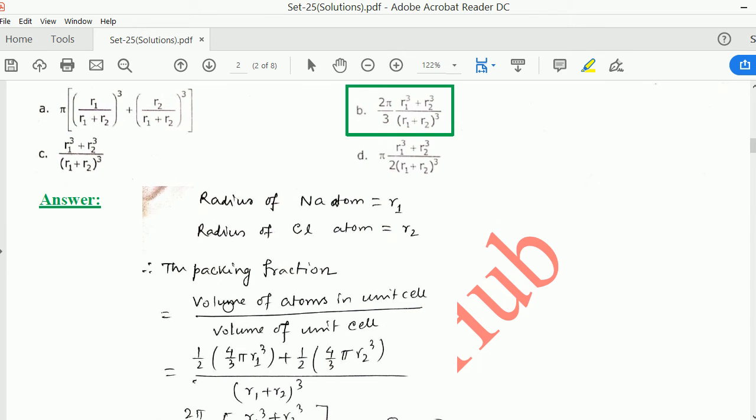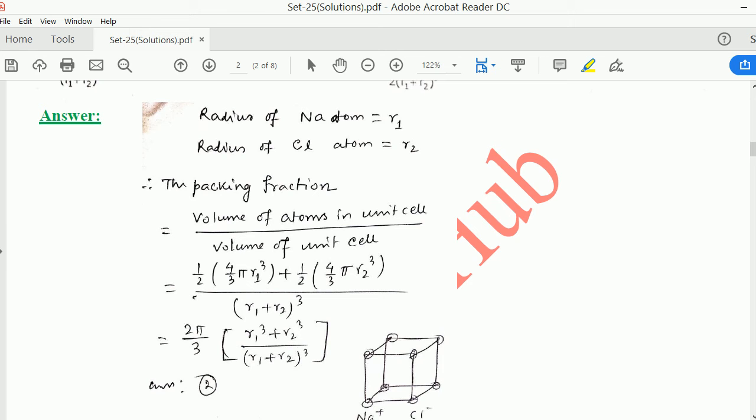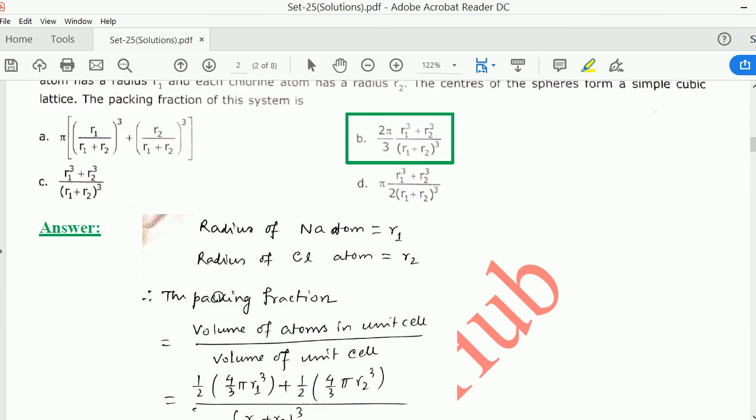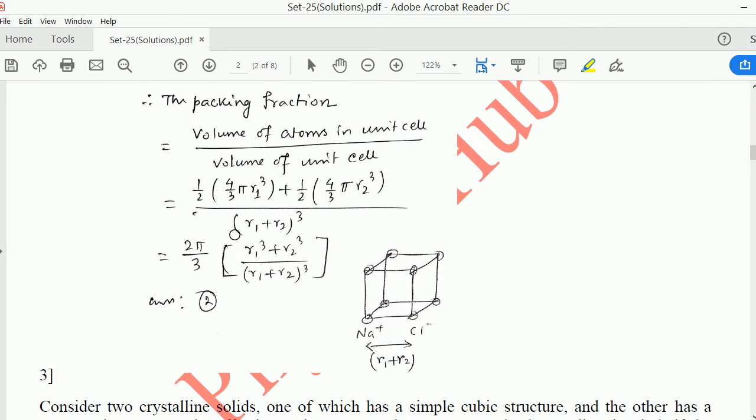Radius of Na atom is r1 and radius of Cl atom is r2. Therefore packing fraction equals volume of atoms in the unit cell divided by volume of unit cell. Now eight atoms are there, and four of them of Na and the rest of chlorine. In case of simple cubic lattice, one atom is shared by eight nearby atoms. So we calculate it as one by eight. But here, only four atoms of Na is considered, so you will get half.